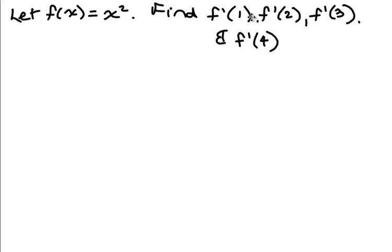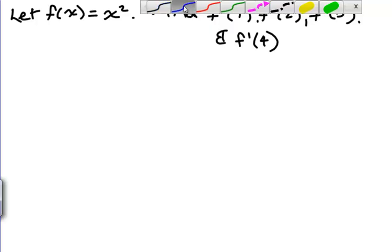Now we found f prime of 1 last time and we could do the exact same thing again to find f prime of 2, 3, and 4. But you must be thinking to yourself there's got to be a better way to do this. And there is.